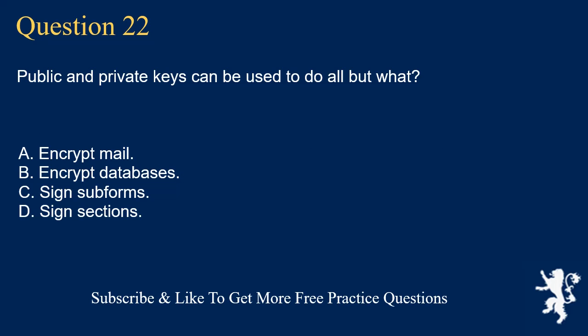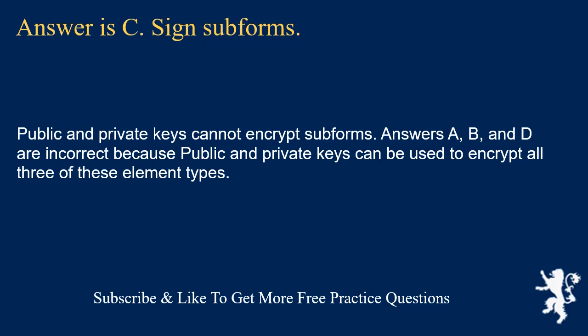Question 22. Public and private keys can be used to do all but what? Encrypt mail. Encrypt databases. Sign subforms. Sign sections. Answer is C: Sign subforms. Public and private keys cannot encrypt subforms. Answers A, B, and D are incorrect because public and private keys can be used to encrypt all three of those element types.